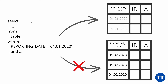If in our query we are saying reporting date equals the 1st of January 2020, the database knows it only has to go to that partition. It can completely disregard the other partition, and as a result we get a much quicker query speed.